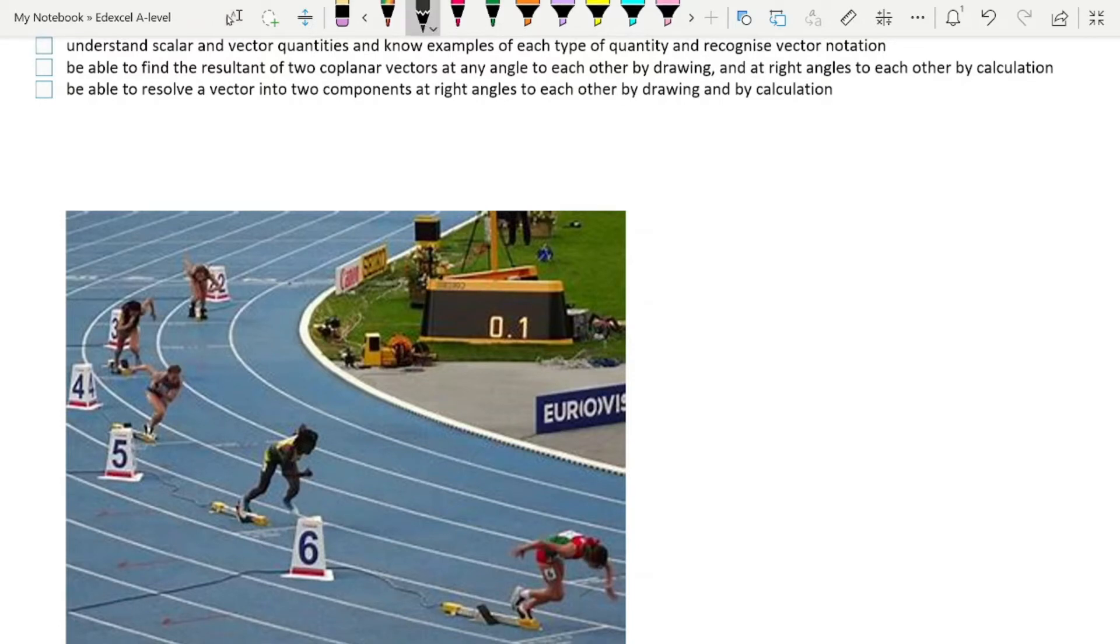400-meter runner and world champion, Alison Felix. She starts running right there on the inside lane of a 400-meter track, and she runs around 400 meters, and she does it in 40.82 seconds.